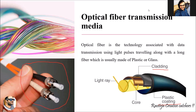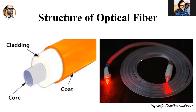These optical fibers have three coatings: the first is the plastic coating, the second is cladding, and the third is the core inside. Our light ray or light energy comes out from the core. On the right side, you can see a real-time image of an optical fiber cable.